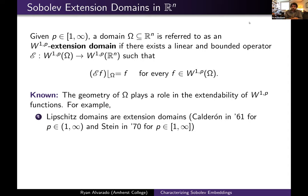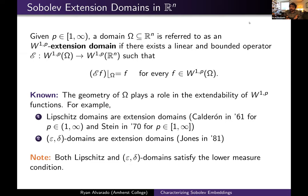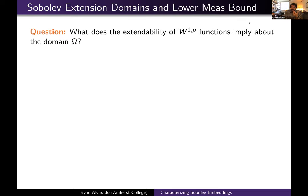This result was later extended to so-called epsilon-delta domains, which are locally connected domains in a quantitative sense, by Peter Jones in 1981. Both of these classes of domains fit into the larger category of n-thick domains. The natural question — just as for Sobolev embeddings — is: what does the ability to extend W^{1,p} functions from omega to all of R^n imply about the properties of the underlying domain, in particular about the Lebesgue measure on omega?